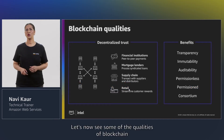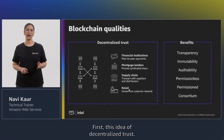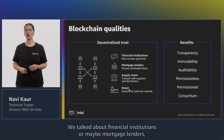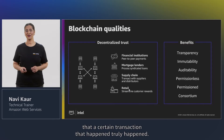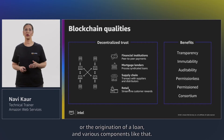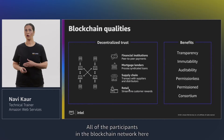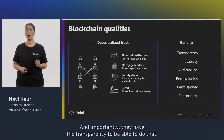Let's now see some of the qualities of blockchain that enable those use cases. First, the idea of decentralized trust — financial institutions or mortgage lenders being able to agree amongst multiple different lenders or parties that a certain transaction truly happened. They are able to agree on a sequence of steps or the origination of a loan, and all participants in the blockchain network are able to agree on what happened — and importantly, they have the transparency to do that.